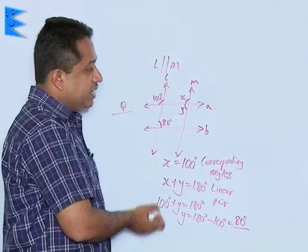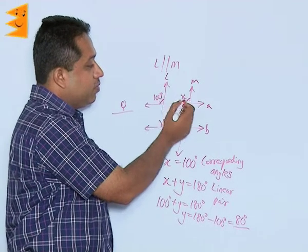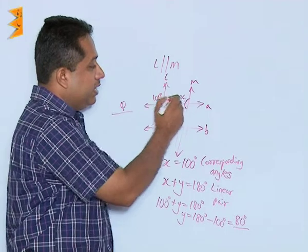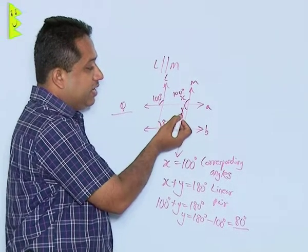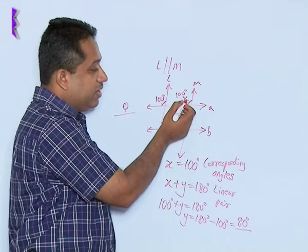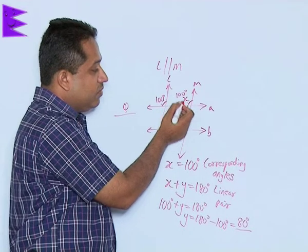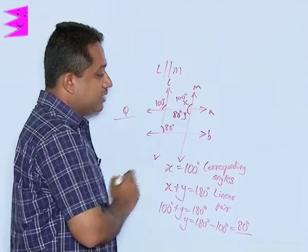So, the two unknowns were there. We found x by using the corresponding angles property - x is 100 degrees. And we found y by using the linear pair axiom. We know that x and y will give a total of 180, so y will be 180 minus 100. We found the value of y as 80 degrees.